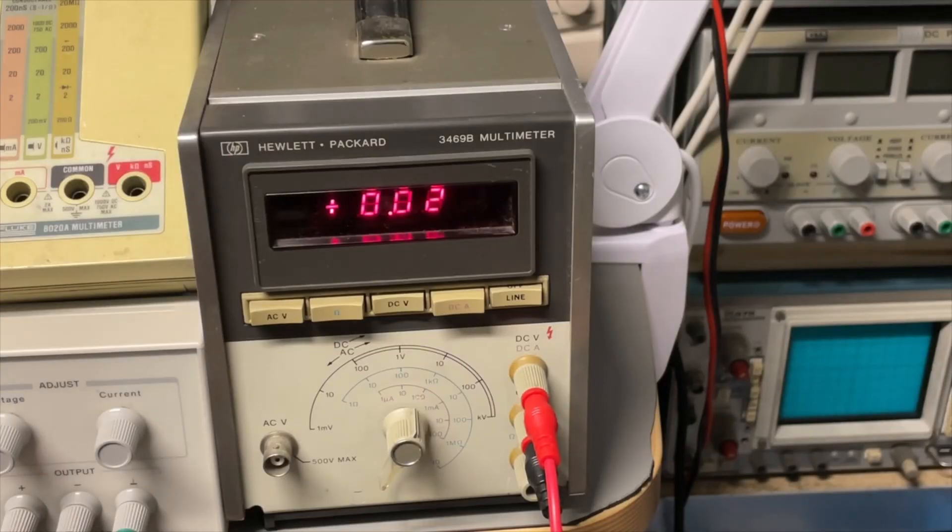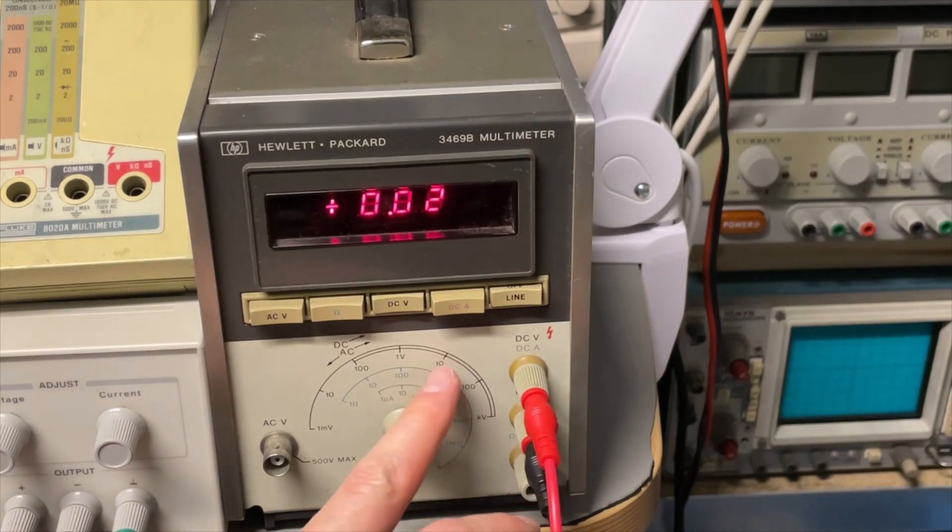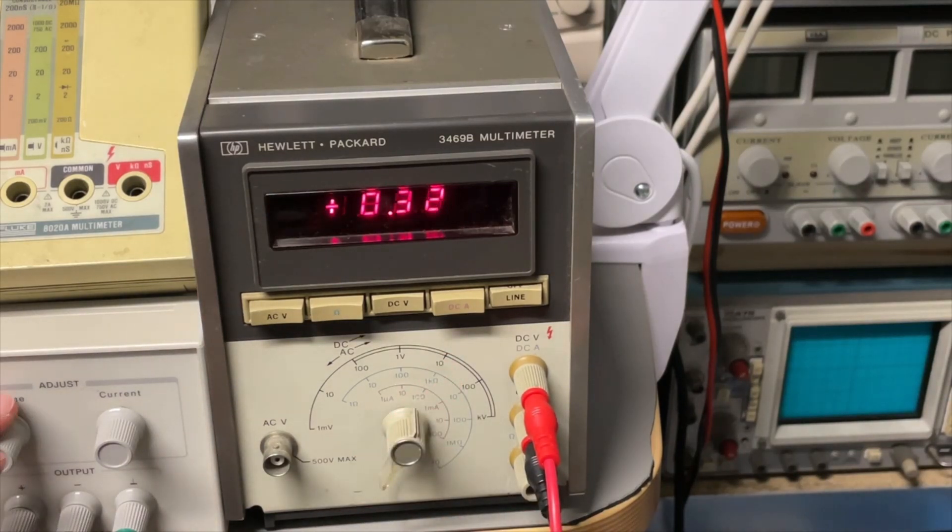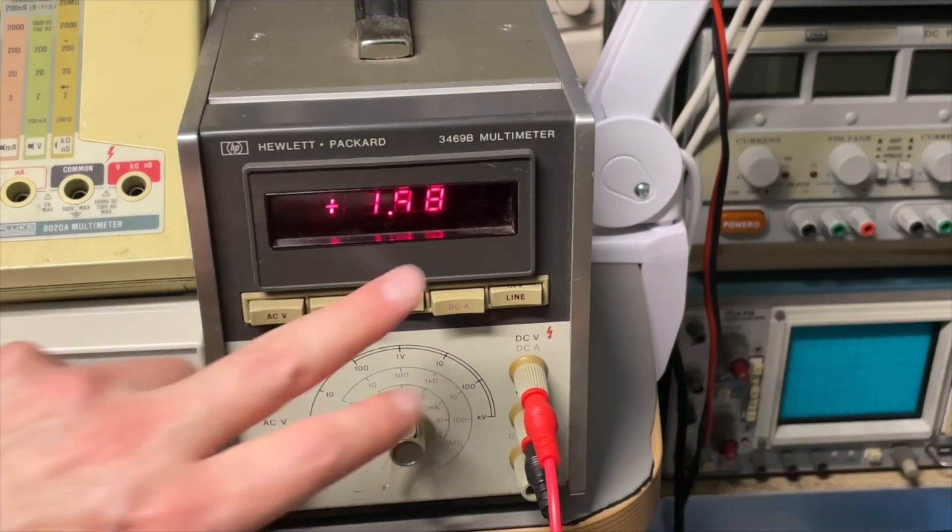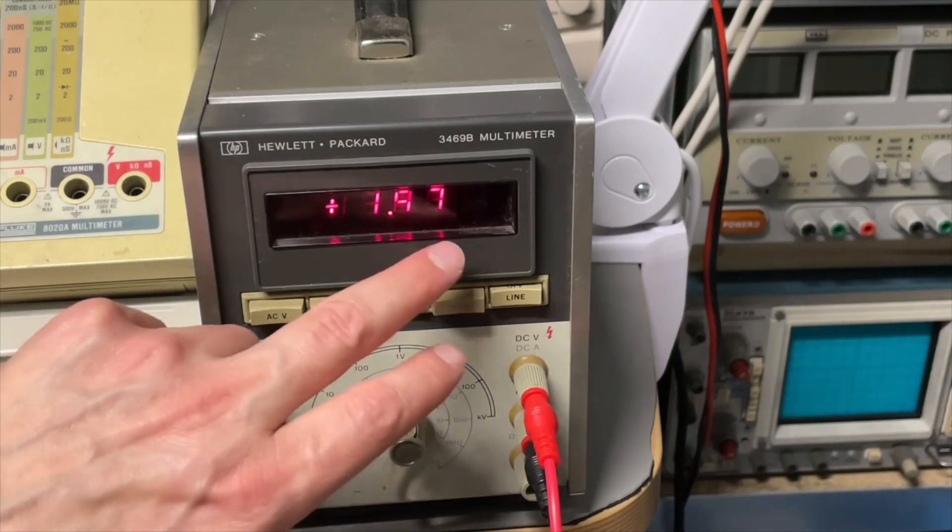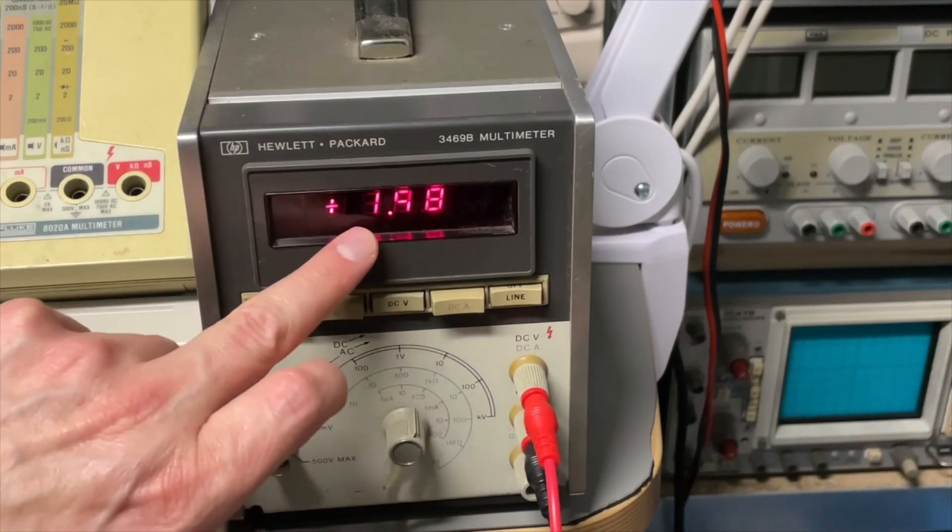Well, here I have an old HP voltage meter, digital multimeter. Here, it is set to the 10-volt setting, and I'm just increasing the voltage. And as you can see, it has two decimals, nothing wrong, perfect, three digits, one, two, three.